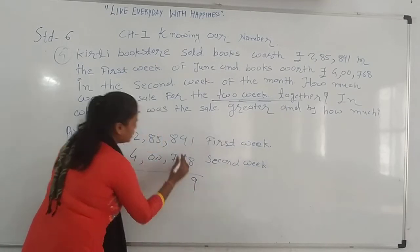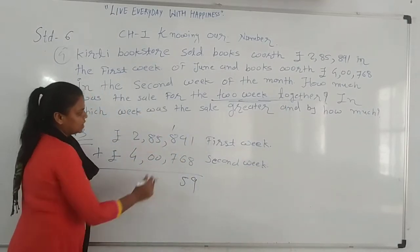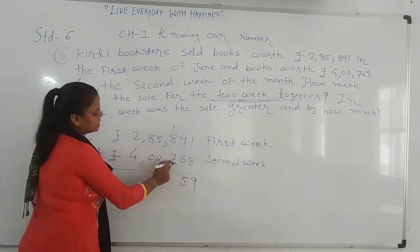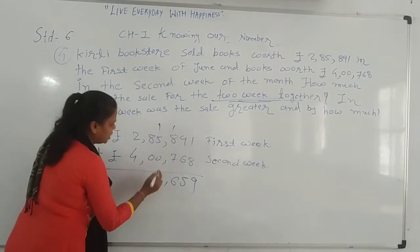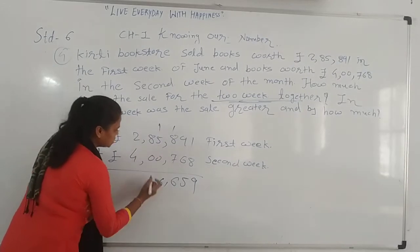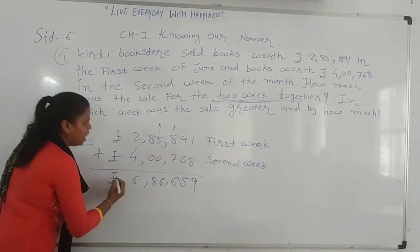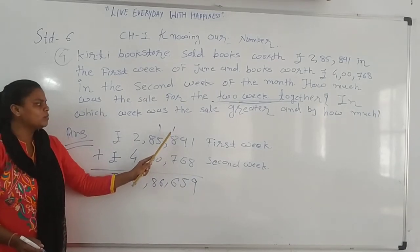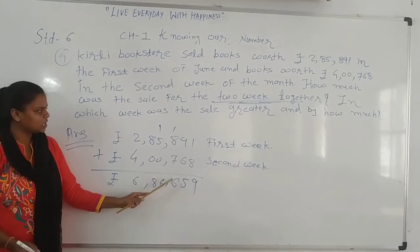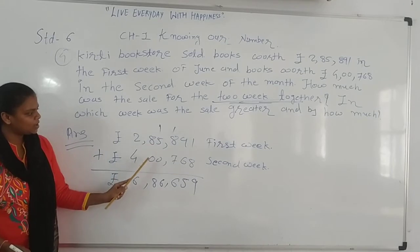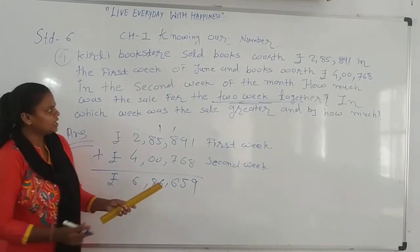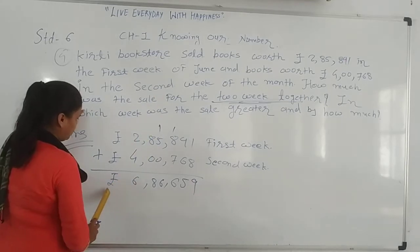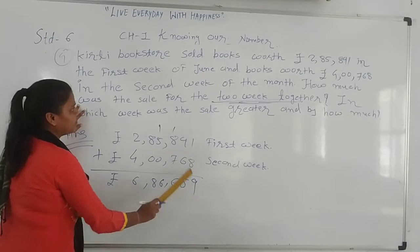Addition: 1 plus 8 is 9, 9 plus 6 is 15, carry forward 1. 7 plus 1 is 8, 8 plus 8 is 16, carry forward 1. 8 plus 1 is 9, 9 plus 7 is 16, carry forward 1. 5 plus 1 is 6, 6 plus 0 is 6. 8 plus 0 is 8. 2 plus 4 is 6. So the total for two weeks is 6,68,659.